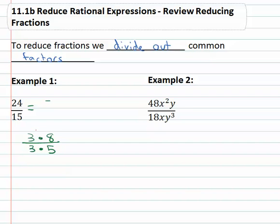When there's a common factor, we can divide it out completely, leaving just the fraction eight over five left.